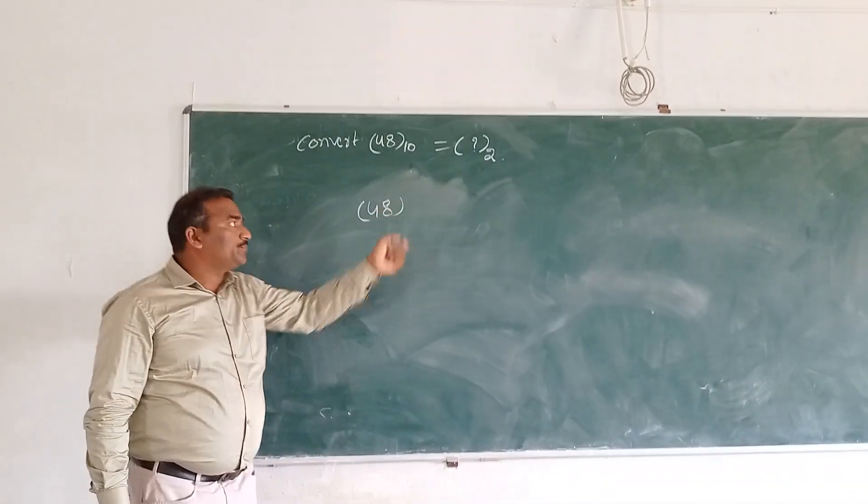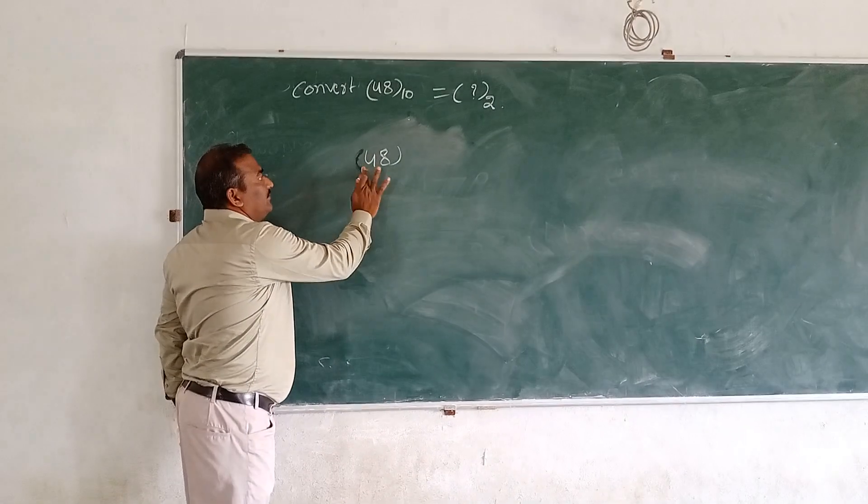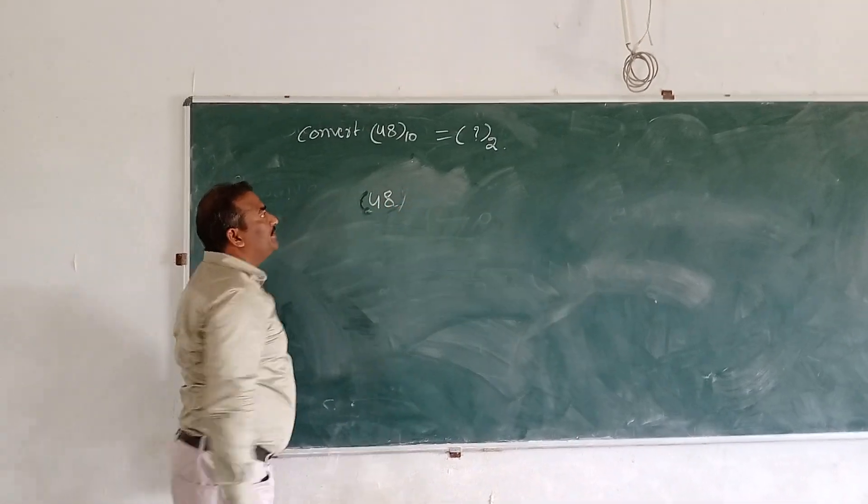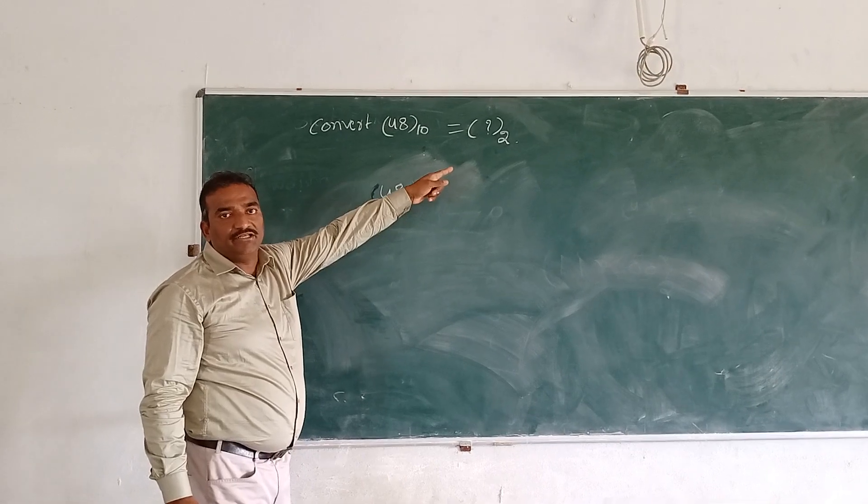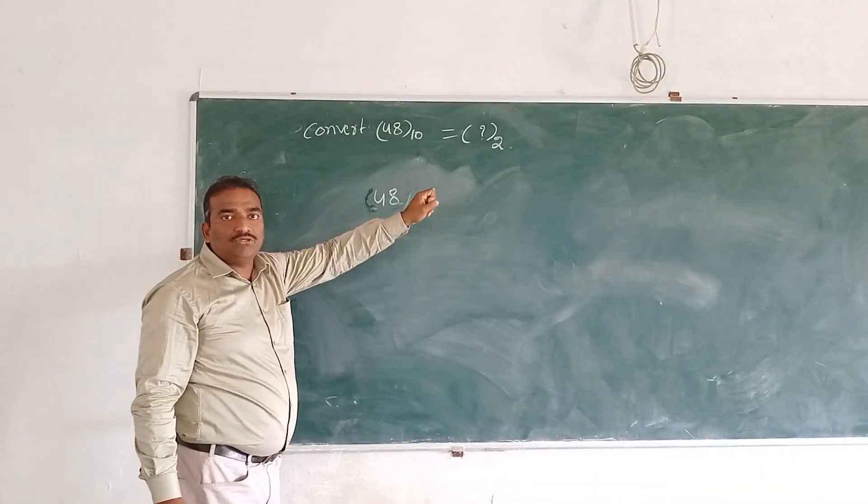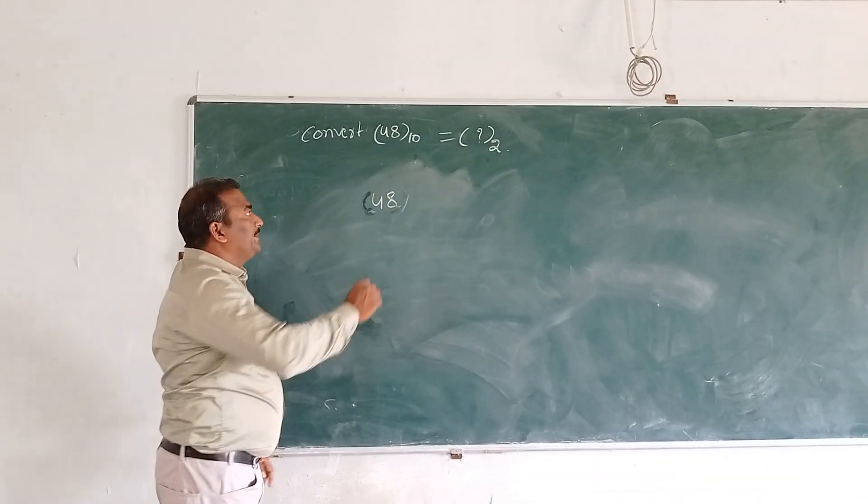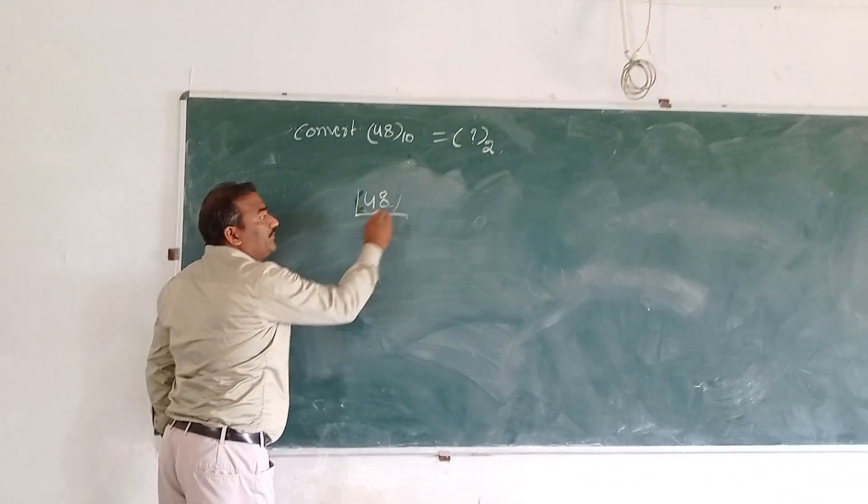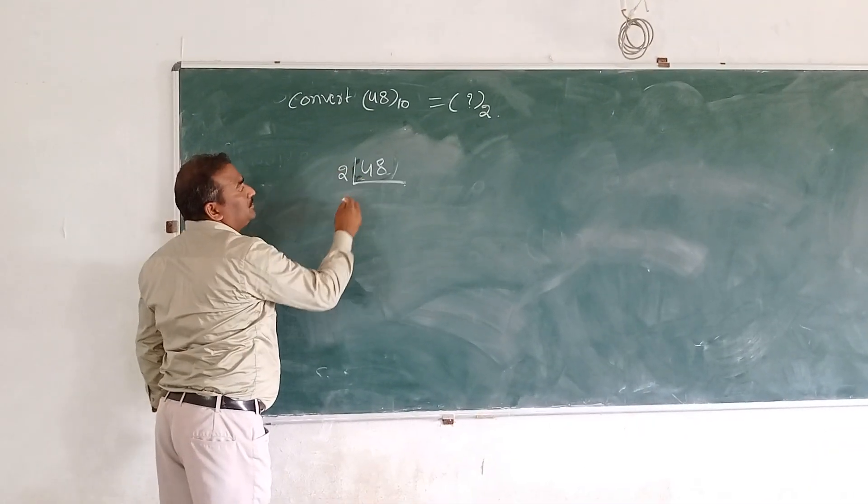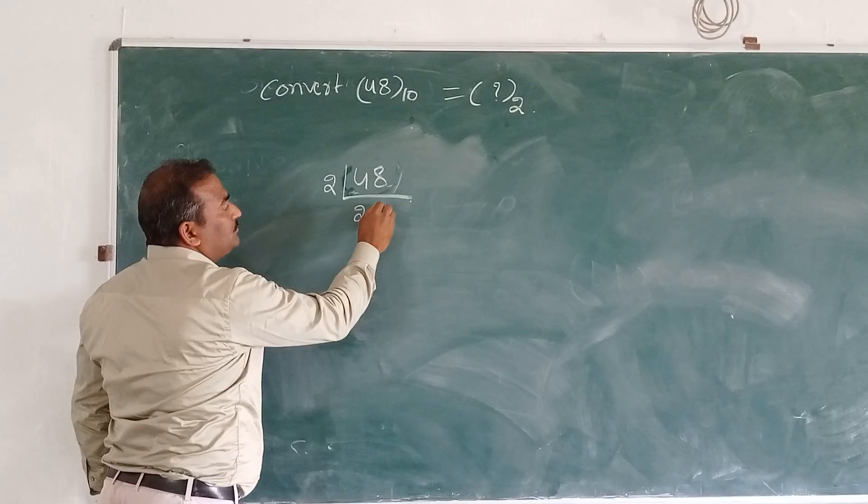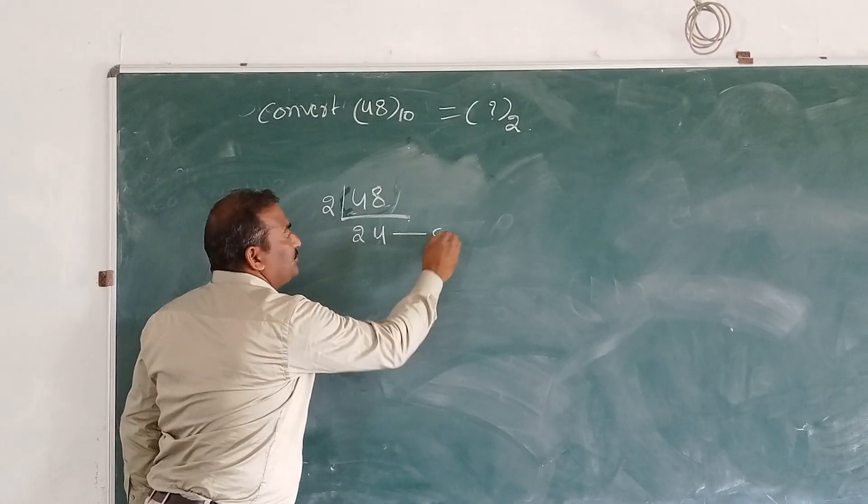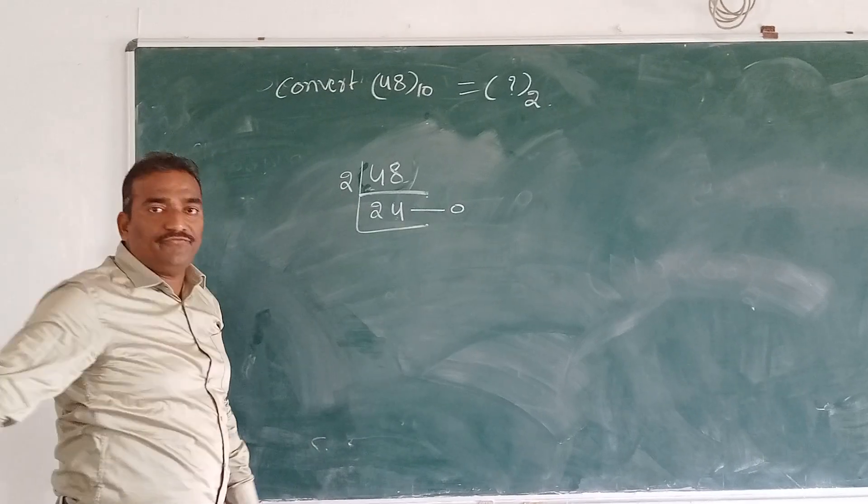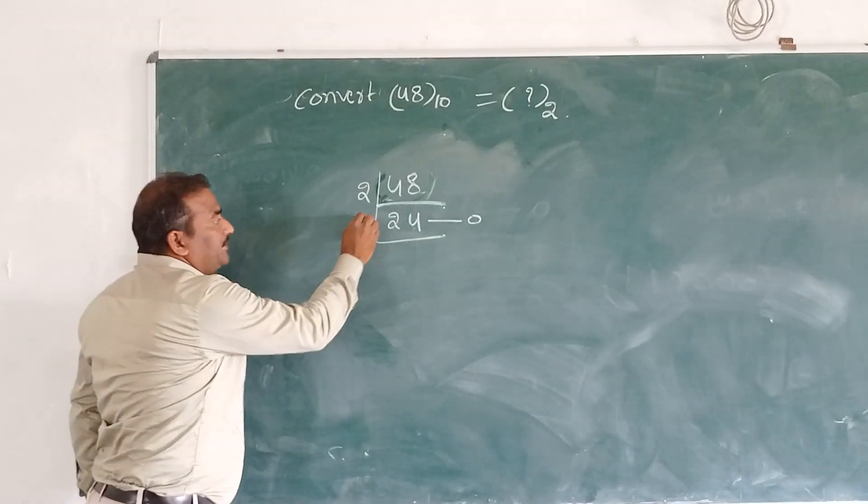For this problem, the procedure is: first, 48 divided by 2. Here 2 means base 2. 48 divided by 2 equals 24 with remainder 0. Then 24 divided by 2